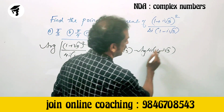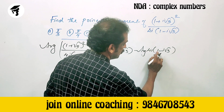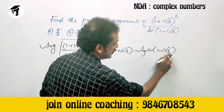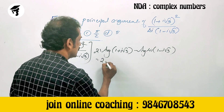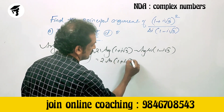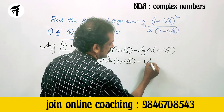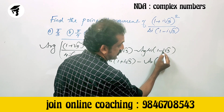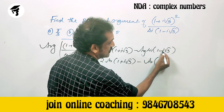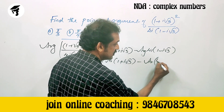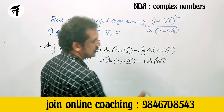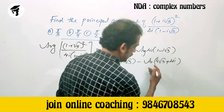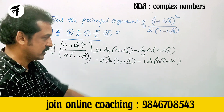For the denominator, 4i into (1 - i√3): expanding gives 4i minus 4i²√3. Using i² = -1, that becomes 4√3 plus 4i. So the A + iB standard form is: real part 4√3 and imaginary part 4i.